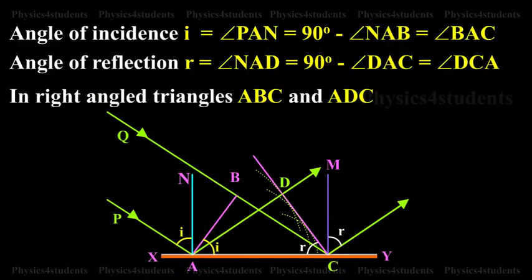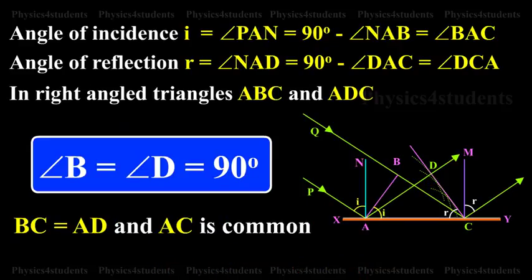In right angle triangle ABC and ADC, angle B is equal to angle D is equal to 90 degrees. BC is equal to AD and AC is common.